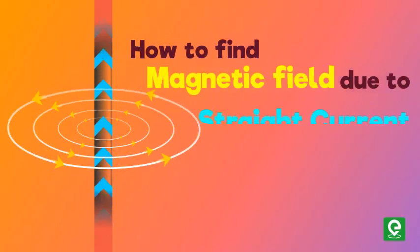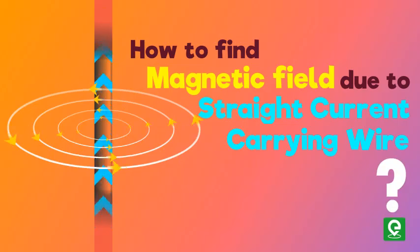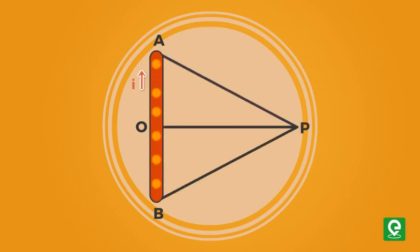How to find magnetic field due to straight current carrying wire. Let's consider a straight wire segment AOP carrying the current I and there is a point P at which magnetic field is to be calculated. This wire segment makes angle theta 1 and theta 2 at that point P with normal OP.